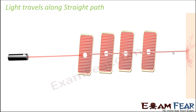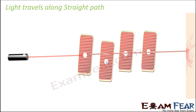Now move just one card so that its hole is no longer aligned with the others. You will see that the light does not bend around it. If light could bend, it would curve through the displaced hole and continue — but since light cannot bend, it travels straight, hits the opaque card, gets blocked, and is not seen on the screen. This clearly demonstrates that light can travel only along a straight path.